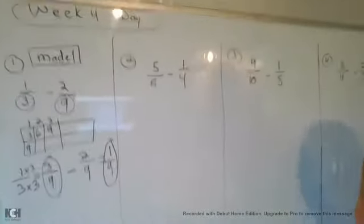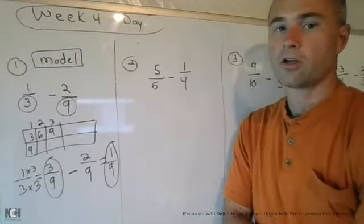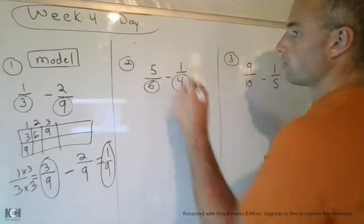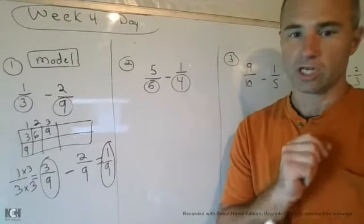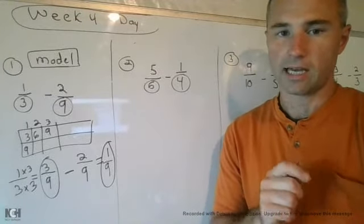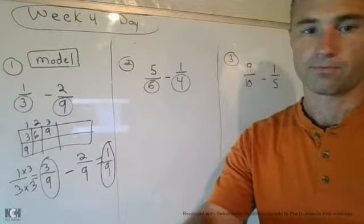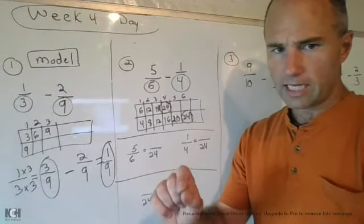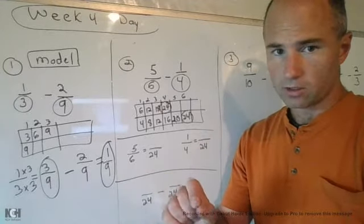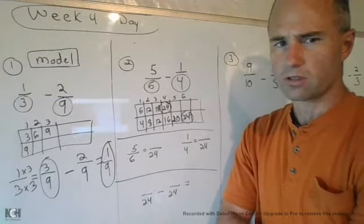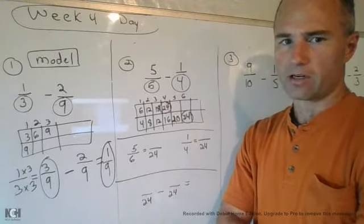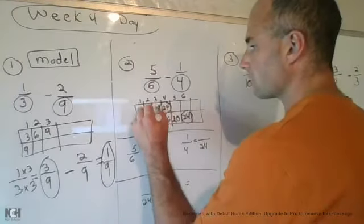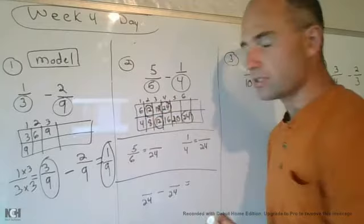Number two, 5/6 minus 1/4. So this is one of those problems where you have to find a common denominator, and both fractions will change. Go ahead and do that now, and then subtract. Alright, so here we are. We found the common denominator of 24. Wait a second, Mr. Brizlin. I didn't find 24 as my common denominator. I found 12. Oh, even better. That's going to make it easier for us.